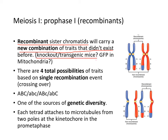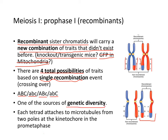The recombination mechanism is also what is used to produce knockouts in transgenic mice and GFP labels in mitochondria. There are four total possibilities of traits based on a single recombination event: two parental chromatids (ABC and abc) and two recombinant chromatids (ABc and abC). This is another source of genetic diversity.